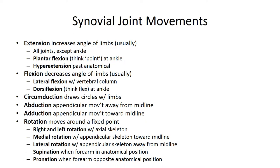In the anatomical position, the forearm is supinated with the radius and ulna lying parallel to each other and the palm facing anteriorly. Pronation is when the shaft of the radius rotates and the distal epiphysis of the radius rolls across the anterior surface of the ulna so that the bones are crossing, and the palm faces posteriorly, like when a basketball player pronates to dribble the ball.